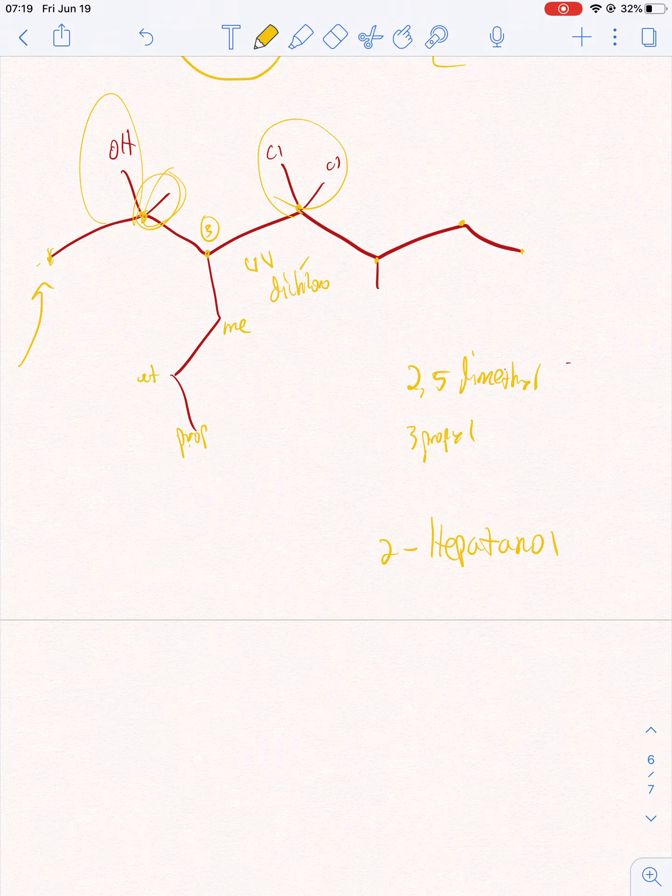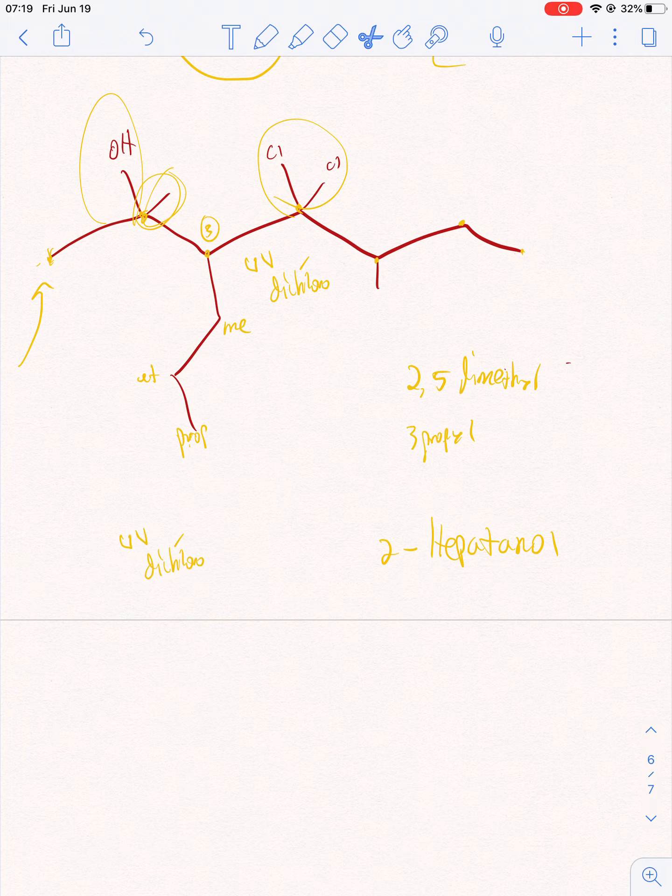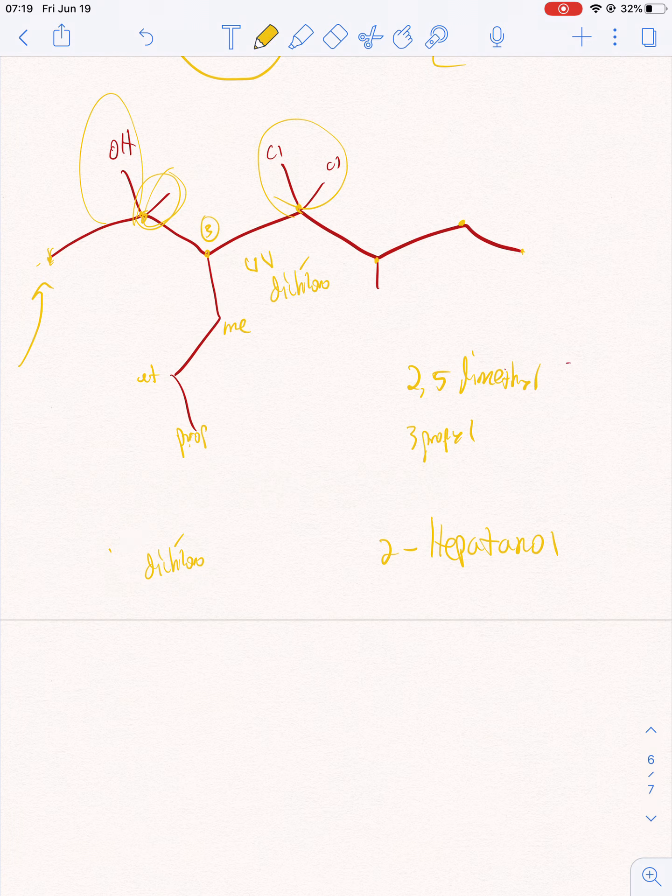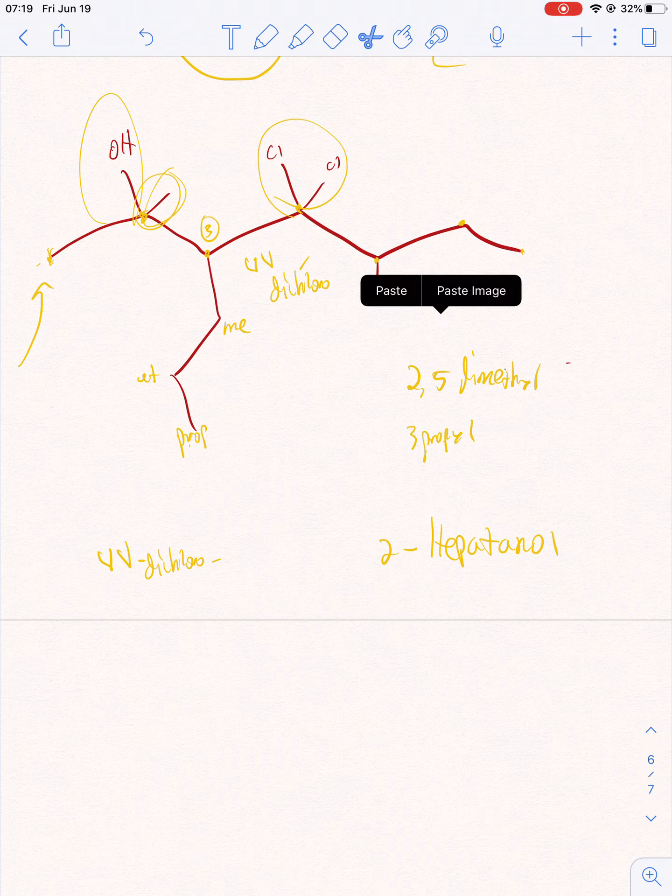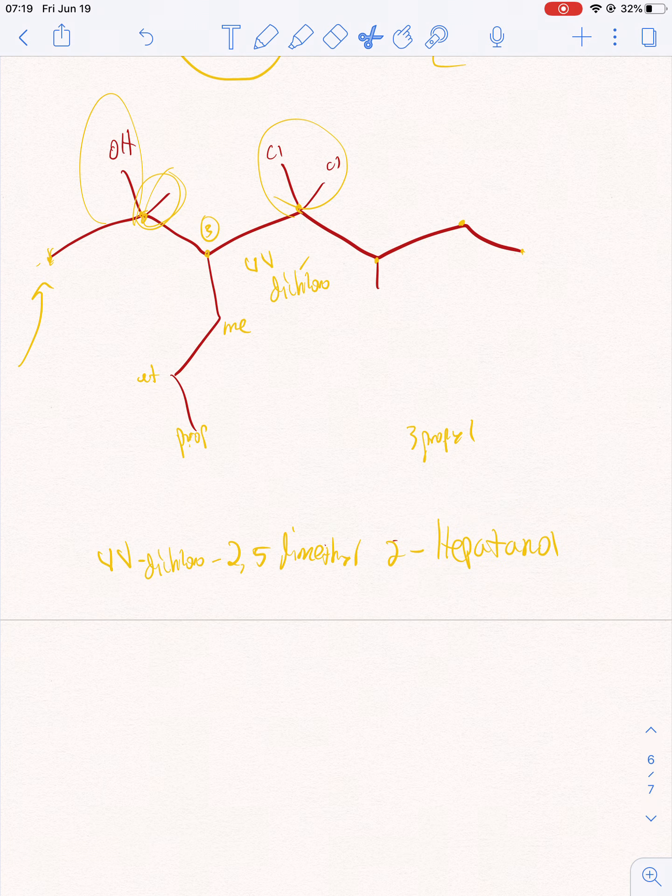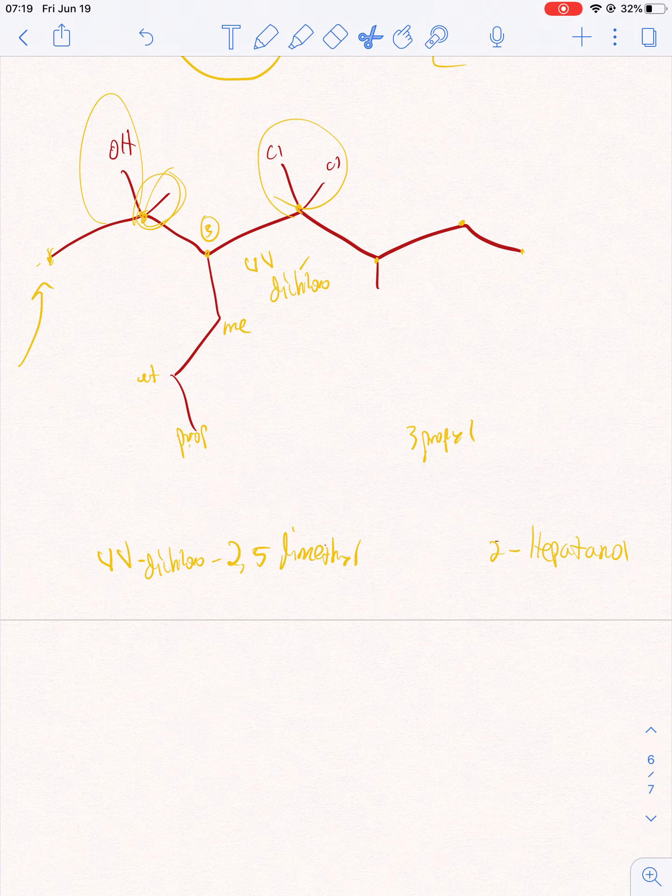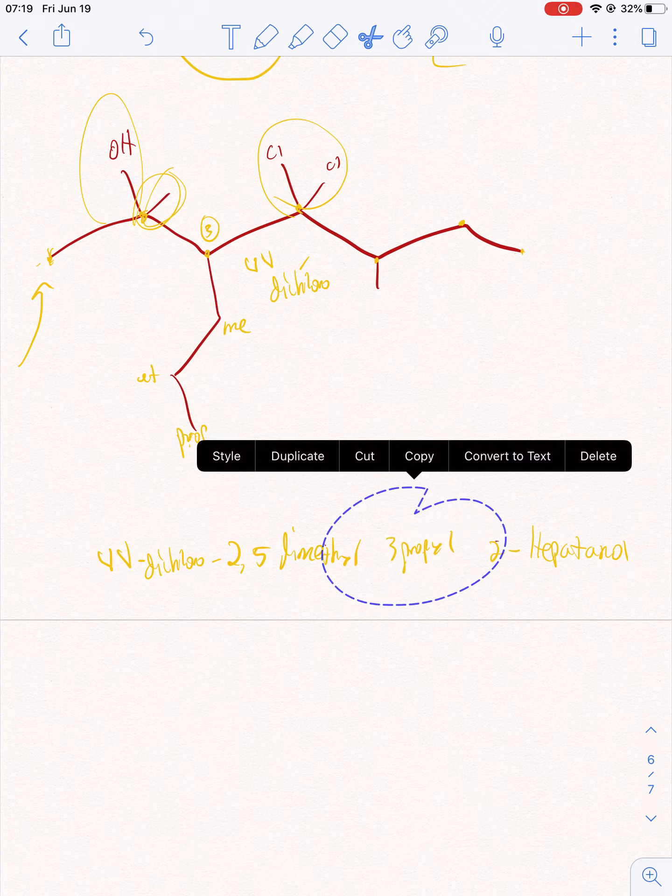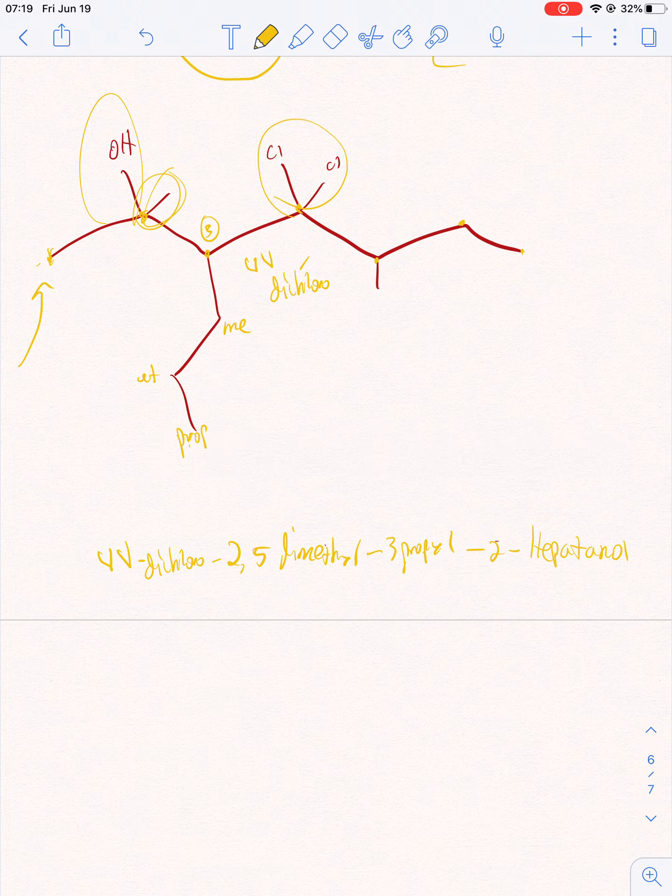So we have four, four - di. Oh actually, I don't need to do any of this. Four, four dichloro, two, five dimethyl, two, five dimethyl, three propyl, two heptanol.